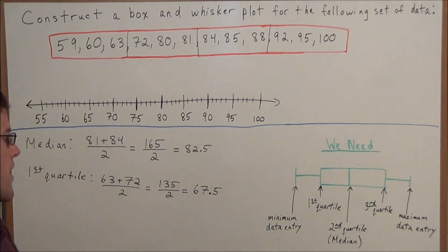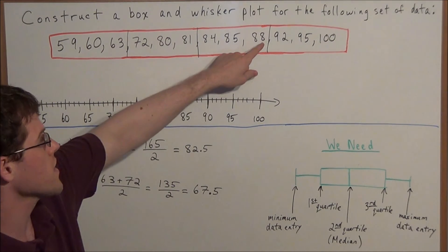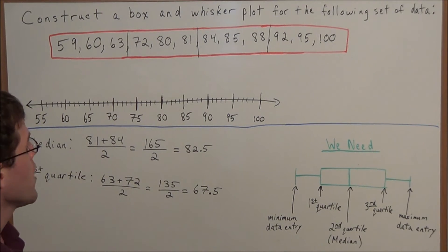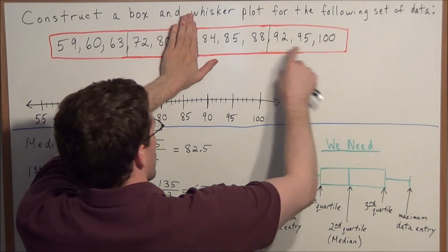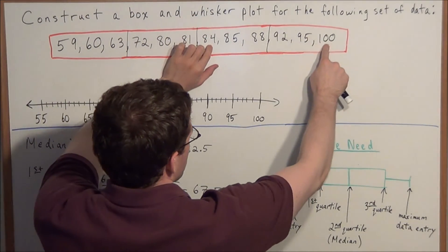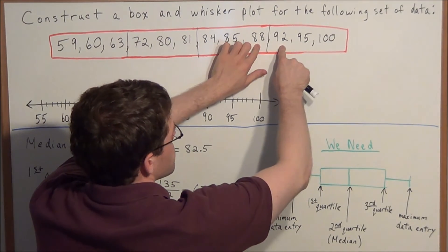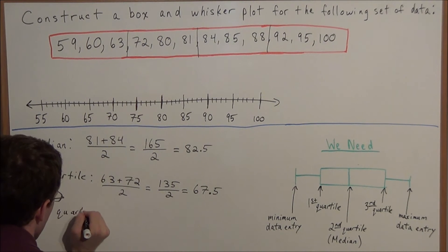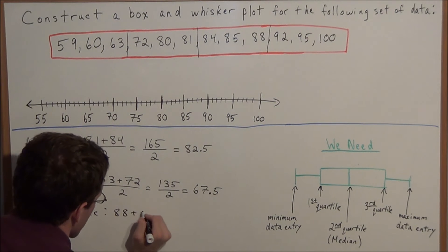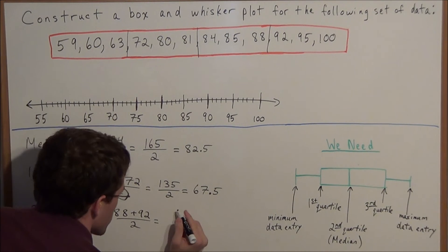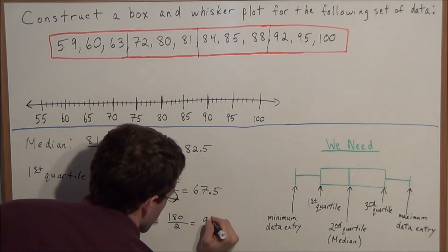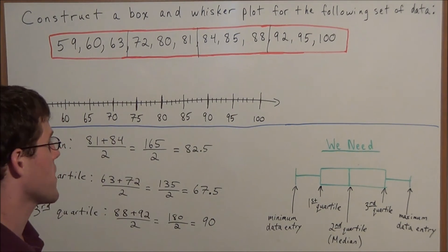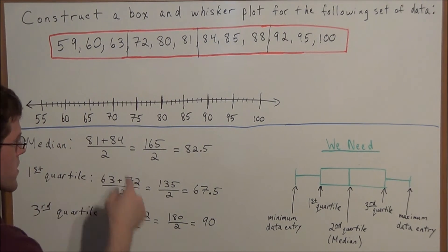For the third quartile, we look at all the data to the right of the median, starting at 84 and ending at 100. We march towards the middle and again find no middle number, so we find the average of 88 and 92: 88 plus 92 divided by 2 equals 180 divided by 2, which is 90. You could also eyeball it since 88 and 92 are 4 apart, making 90 the midpoint — but the formula is a reliable fail-safe.